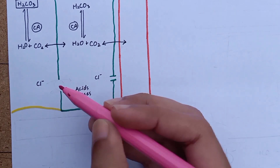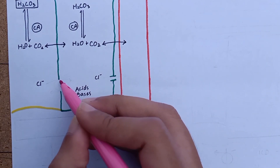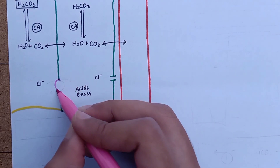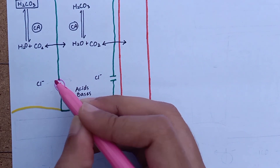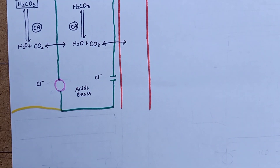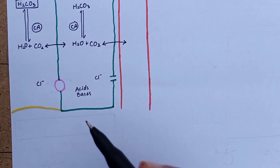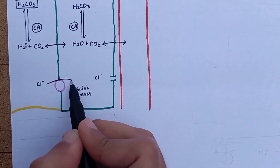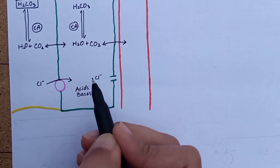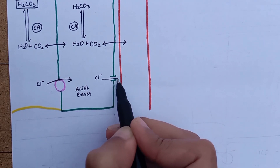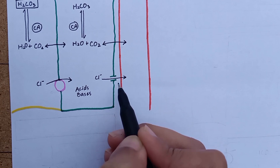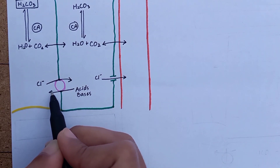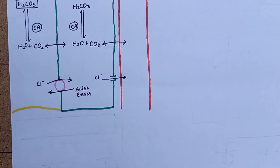Higher chloride ion concentration in the tubular lumen favors its reabsorption through specific chloride channels, while organic acids and bases such as bile salts, oxalates, urates, and catecholamines are secreted.